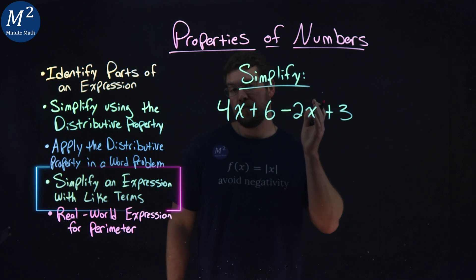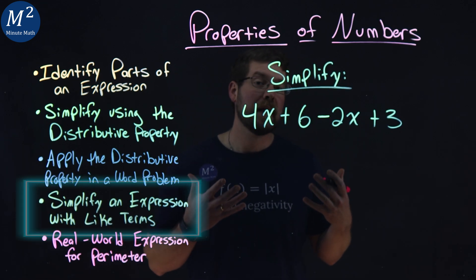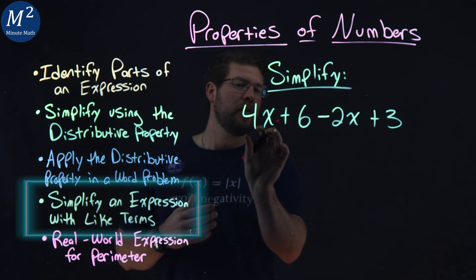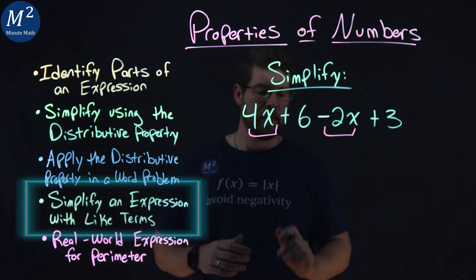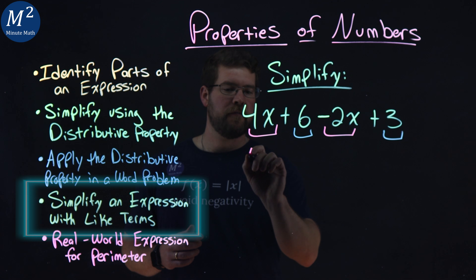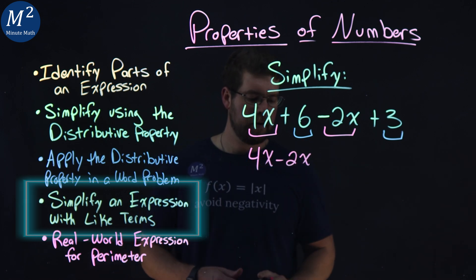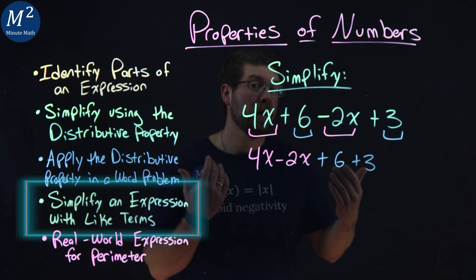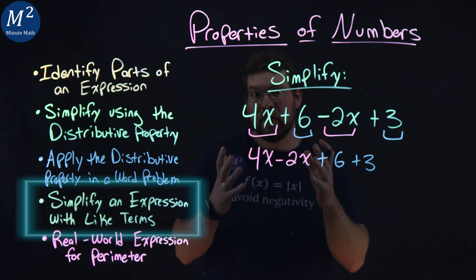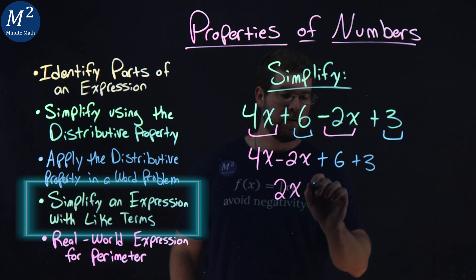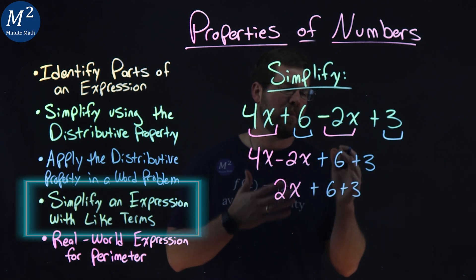Let's simplify the expression 4x plus 6 minus 2x plus 3. I first want to combine my like terms, and to do that I want to reorder the terms so the like terms are next to each other. I see my like terms of 4x and minus 2x. And then the other set of like terms — the constants — are the 6 and the 3. So let's rewrite this to have 4x come first, then minus 2x, then plus 6, then plus 3. Now we can combine our like terms. Our first ones are the ones with variables: 4x minus 2x, which gives us 2x. Then we bring down 6 plus 3 — I'm going to show each step individually.